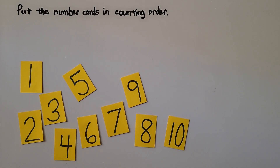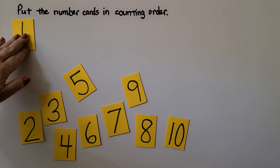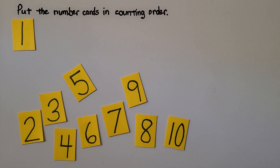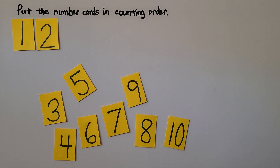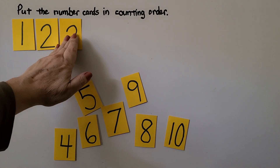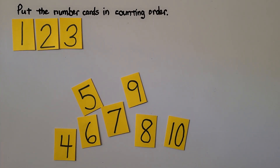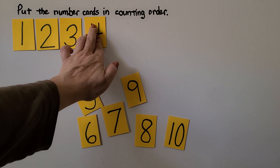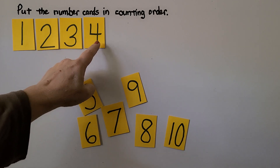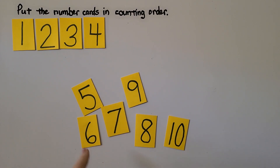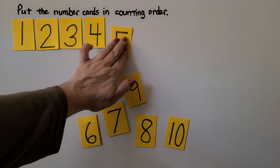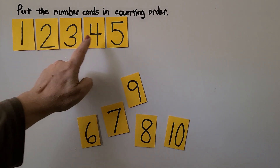Here we have some number cards and we need to put them in counting order. The very first one would be 1. Do you know what comes after 1? If you said 2, you're right. Then 3. Do you know what comes next? If you said 4, you're right. Which comes after 4? If you said 5, you're correct. We have 1, 2, 3, 4, 5.